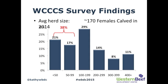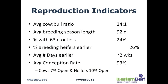In terms of reproduction indicators, the average cow-to-bull ratio was 24 to 1. Breeding season length averaged 92 days — we actually recommend 63 days or fewer, and under a quarter of producers stayed within that recommendation. We also recommend breeding heifers earlier than the rest of the herd, since heifers have longer postpartum intervals and take more time to resume cycling after their first calf. About 26% of respondents were doing that, with an average of about two weeks earlier.